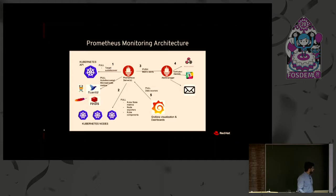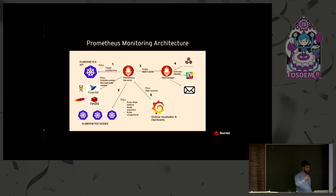The Prometheus server pulls data from different services like FluentDB and Kubernetes and displays the information on Grafana. Grafana is a charting and graphing tool where you can see all your data in a very effective and visually appealing manner.